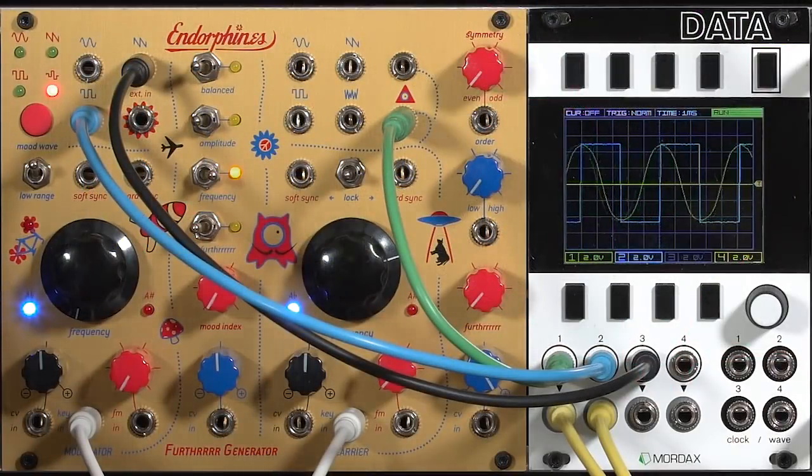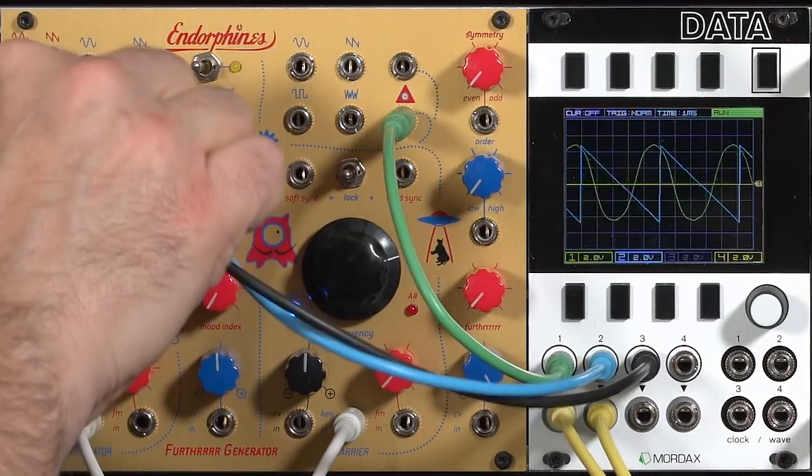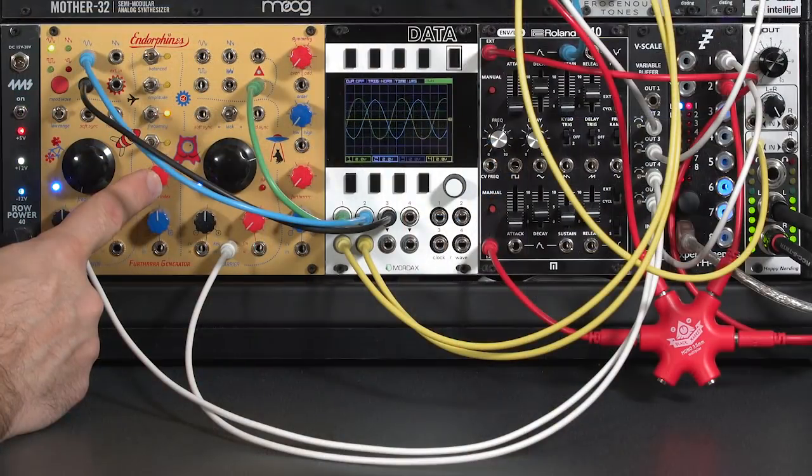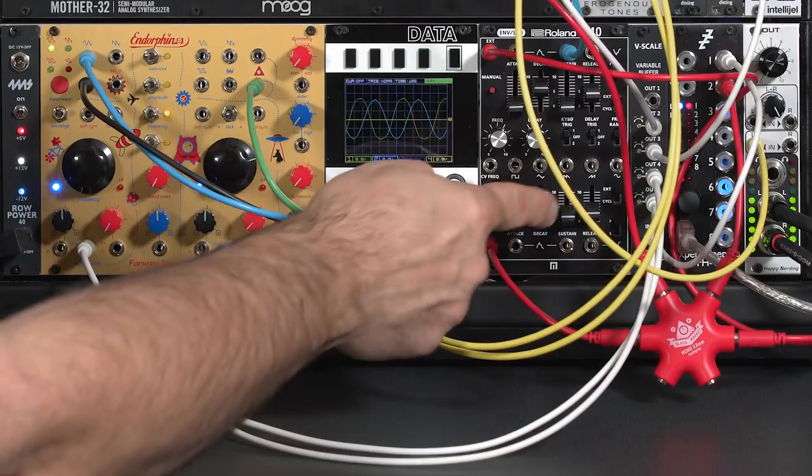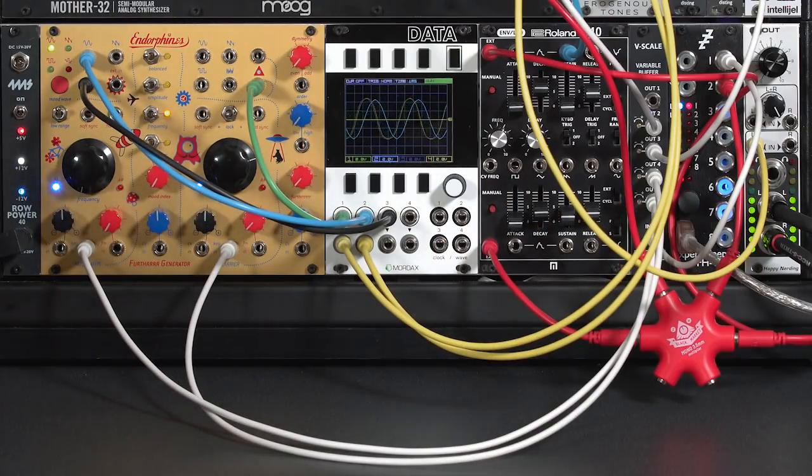So that's a way of getting a different waveform or sound out of the further generator. Now the downside of this pitch shift that you keep hearing whenever I increase the modulation or mood index. Whenever we modulate the depth of the mood index using an envelope generator or an LFO, that pitch is going to go off. And that quite often is a problem.